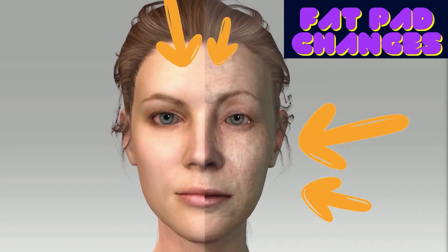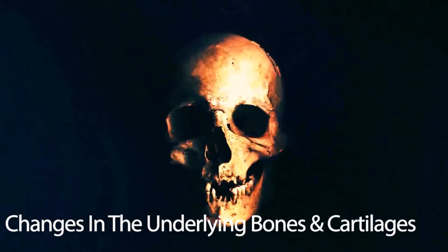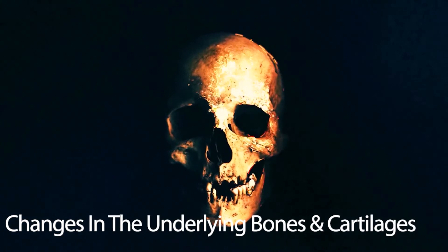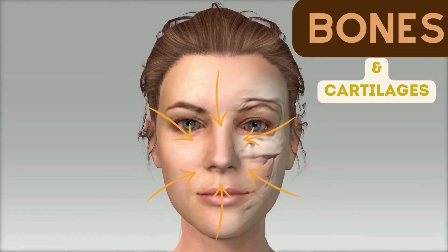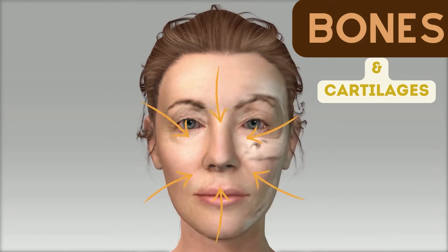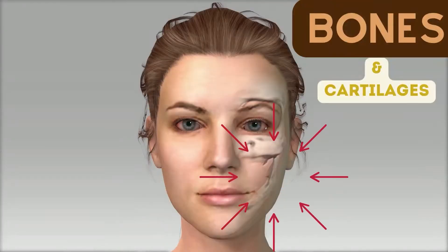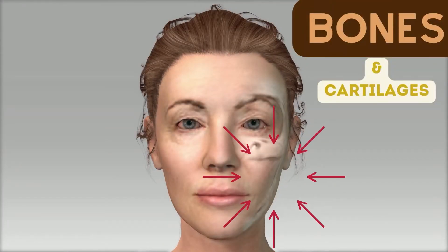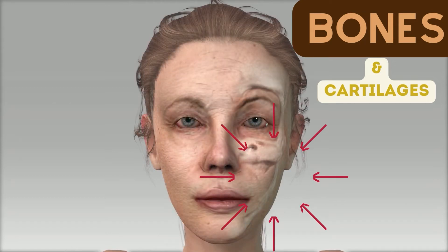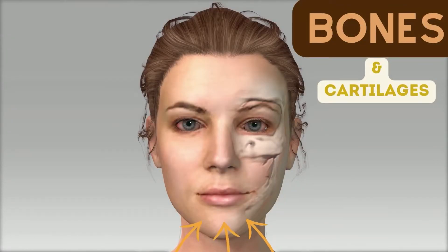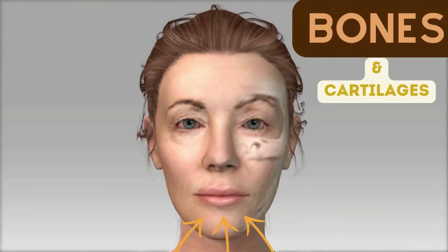Facial aging is not only confined to fat. Changes in the underlying cartilage and bones also play a major role. Elongation of the nose and drooping of the nasal tip are observed around the age of 35. Bone reabsorption and remodeling of the maxilla usually become prominent around age 45, leading to an old look. Sharpening and protrusion of the chin are evident at usually 55 years of age, leading to further disfiguration.